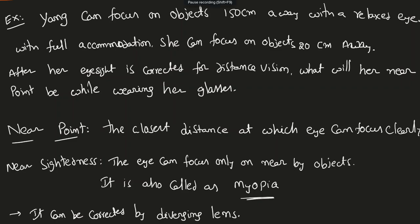In this video, I'm going to solve an example based on lenses. Here is the example. Eng is a person's name. Eng can focus on an object that is 150 cm away with a relaxed eye — basically, she can see with a relaxed eye an object which is 150 cm away from her eye.